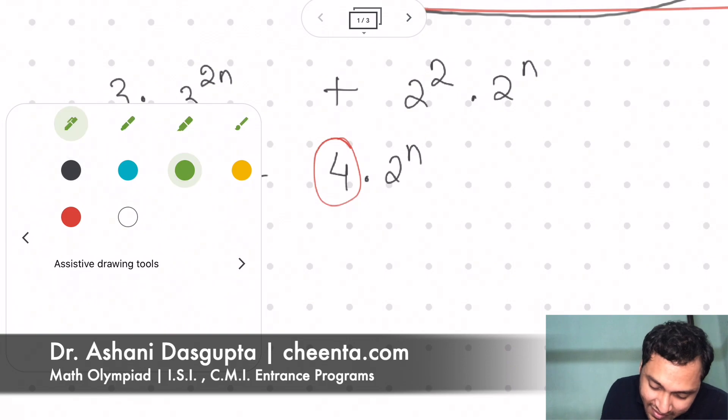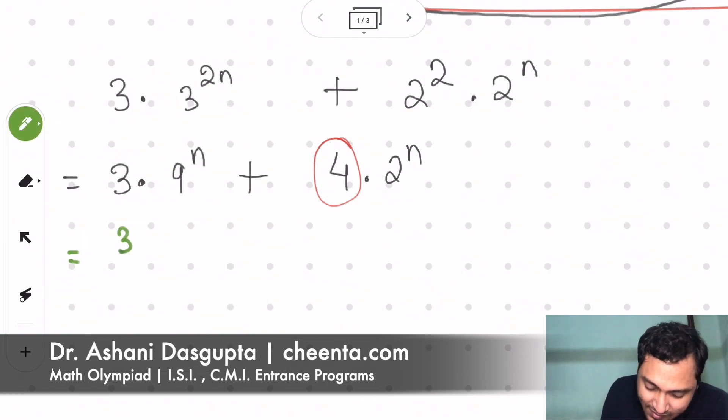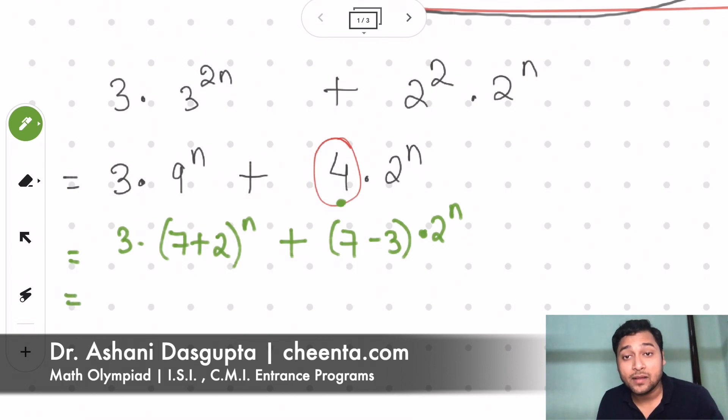So let's try that. I'll use a different color here. So this is 3 times 9 to the power n. I can write 9 as 7 plus 2 raised to the power n. 9 is 7 plus 2, no problem with that. And 4 I will write as 7 minus 3 times 2 to the power n.